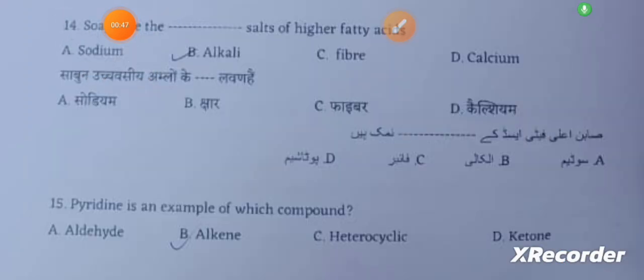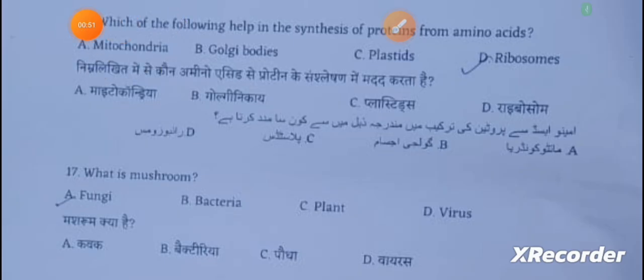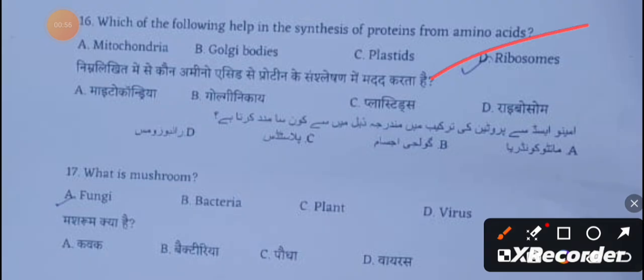Question 15: Pyridine is an example of a heterocyclic compound. Which of the following helps in the synthesis of proteins from amino acids? The answer is ribosomes. What is a mushroom? It is a fungi.